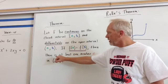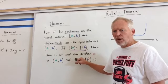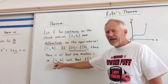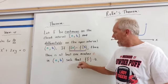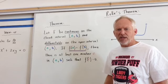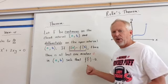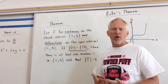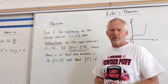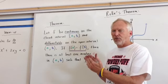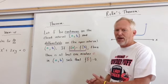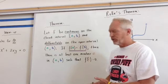then there is at least one C in A, B such that f prime of C is equal to zero. What is f prime of C? F prime of C is the derivative, right? At the derivative of the function at that C value, what is happening for those things.